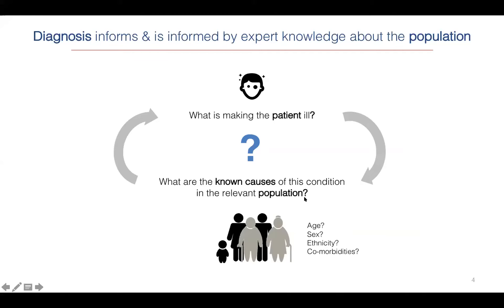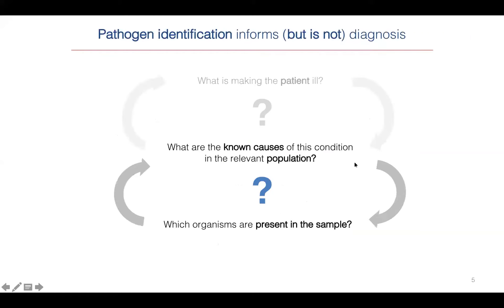In that particular population or slice of population, what are the known causes of this condition and are any of them likely responsible? When we think about pathogen identification, that's actually a different part of this cycle — given the known causes of an infectious condition in a population, which relevant organisms are present in the sample? Discovery of these organisms updates what we believe are the known causes. That's a slightly different cycle, and it's important to keep in mind.